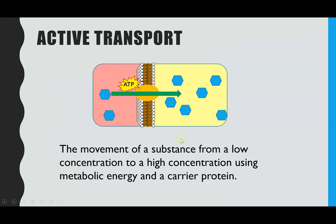Active transport — at GCSE you learn that it's the movement of substances from an area of low concentration to an area of higher concentration. It has to go through a carrier protein, and because it's going against its concentration gradient it requires energy in the form of ATP.